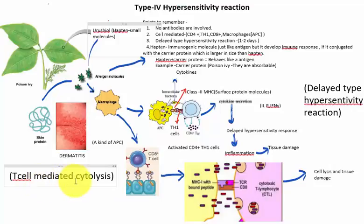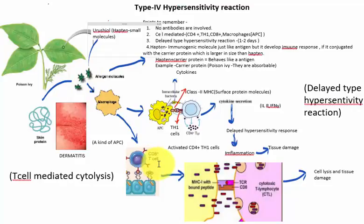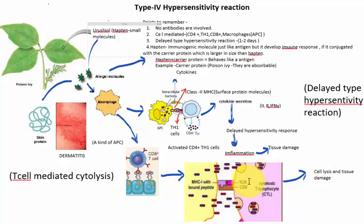The second type is T cell mediated cytolysis, which does not involve the release of cytokines. In this case, the macrophage engulfs the antigen and presents it via the class I MHC molecule. Then the CD8 protein with the T cell receptor (TCR) — a set of integral proteins that activate the T cells — combines with the MHC class I protein. This leads to cell lysis and tissue damage.